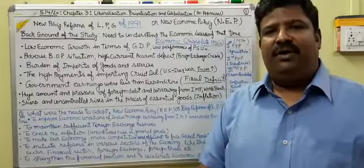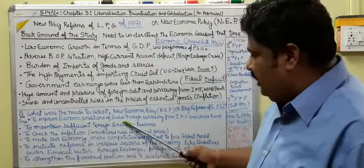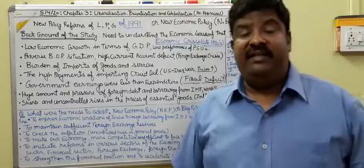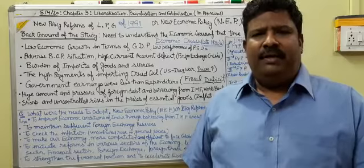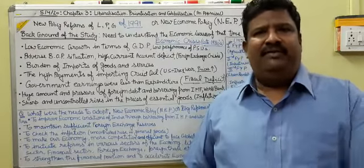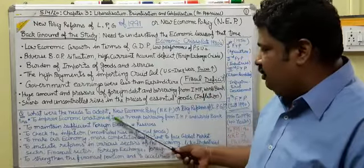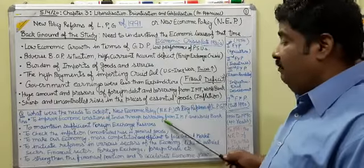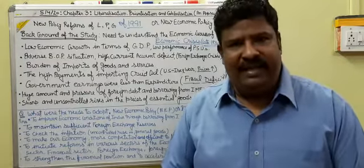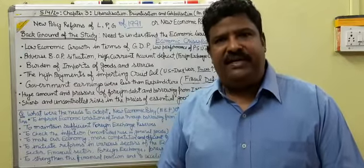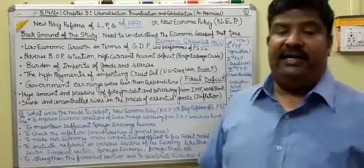The main needs or requirements to adopt the economic reforms of 1991: number one — to improve the economic condition of India through borrowing from the IMF and World Bank. At that time India was in severe financial crisis with a very adverse balance of payments. We had very little foreign currency — not enough for more than one month of imports. Borrowing from international financial institutions like the World Bank and IMF was the main solution.